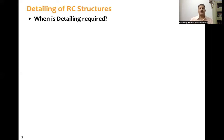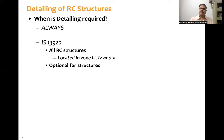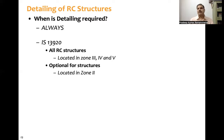Detailing is always required in general, but specifically under IS-13920 provisions, it is mandatory for all RC structures located in seismic Zone 3, Zone 4, and Zone 5. It is optional for structures in Zone 2. Adequate detailing ensures monolithic behavior of connections and members under reversal of earthquake loads due to ground motion.